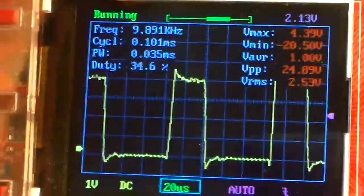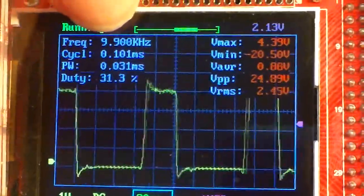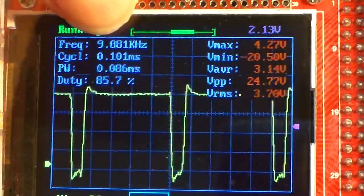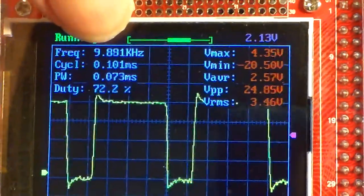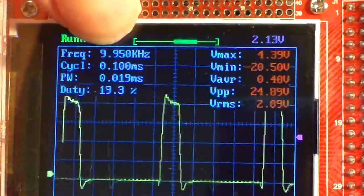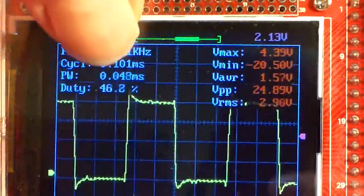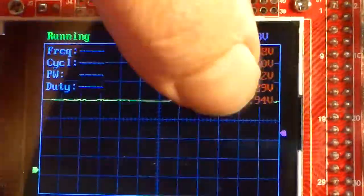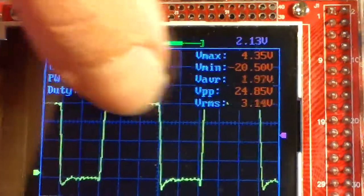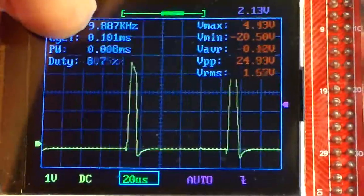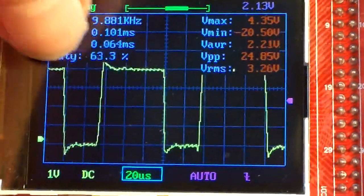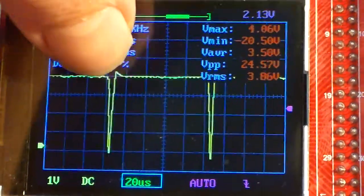So I'm pulsing my LEDs at about 10 kilohertz, 9.89 or whatever, about 10 kilohertz. And you can see this is the duty cycle, the amount of time that the LEDs are actually on.